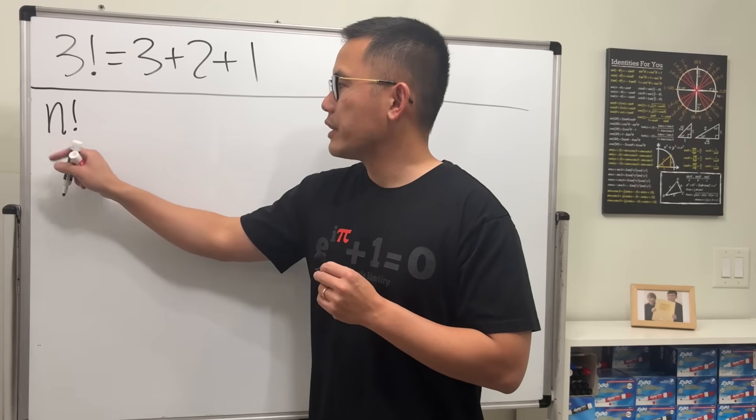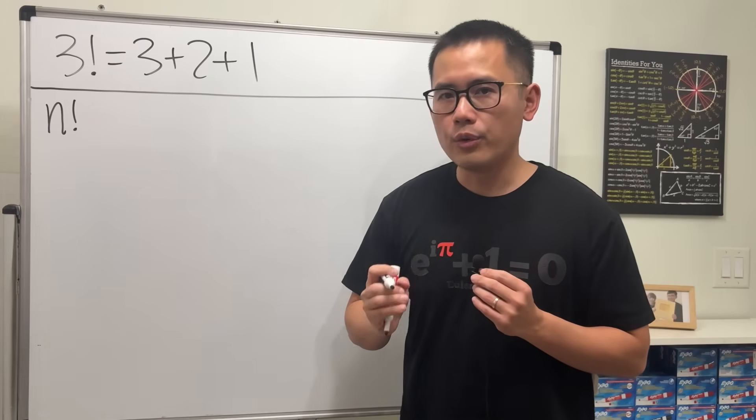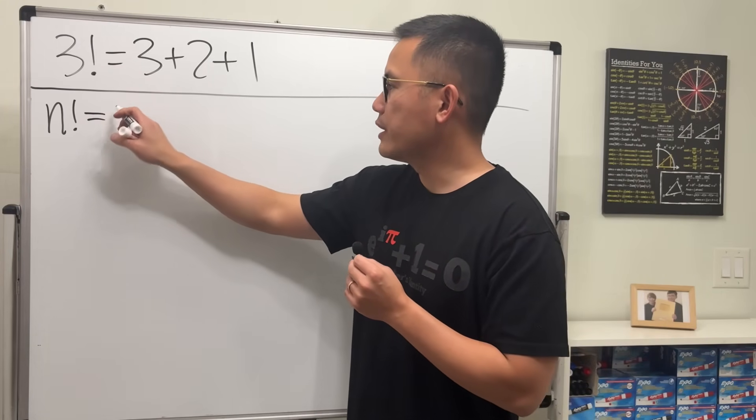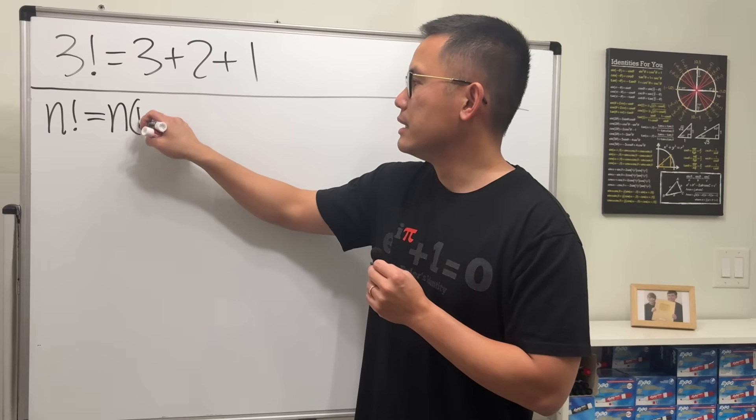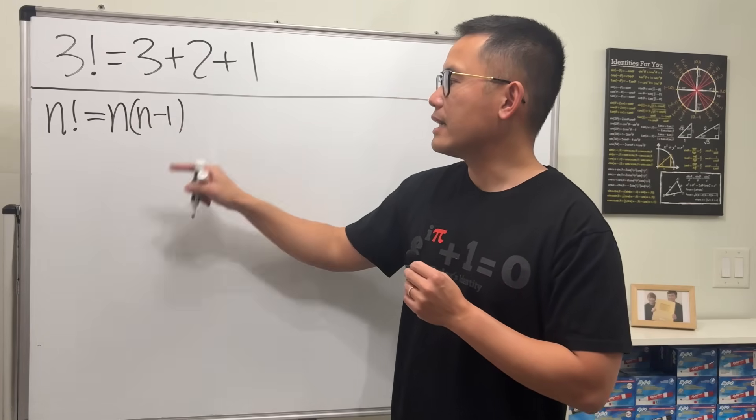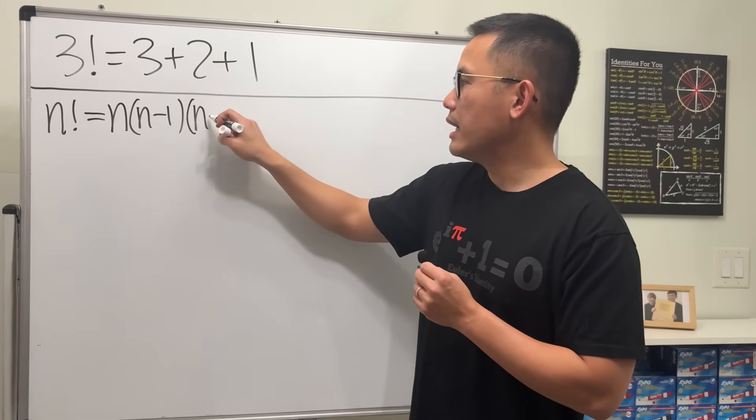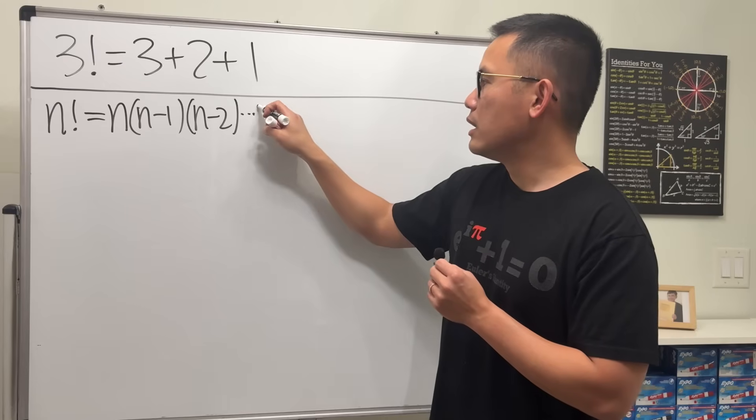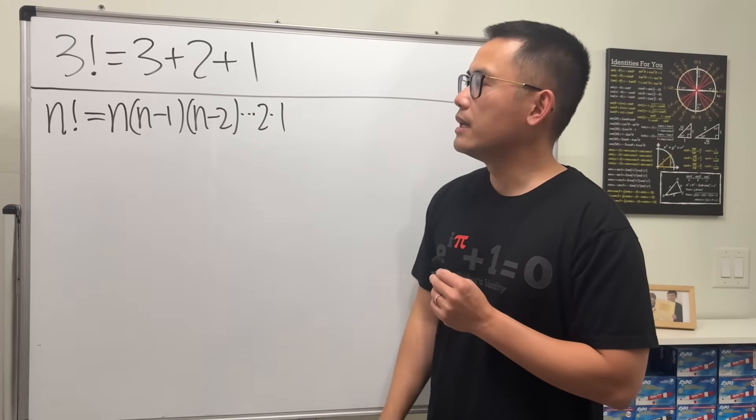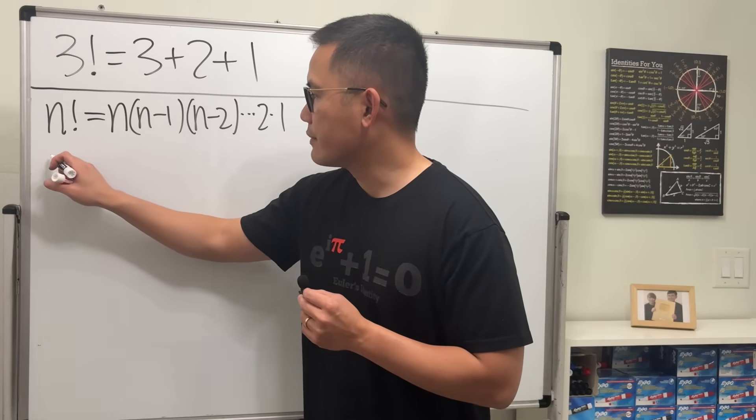you have n factorial here, n has to be a positive whole number. In that case, you can break it down as n times one less than that, so n minus 1, then times n minus 2, and so on up to 1. For example, if you have, let's say...